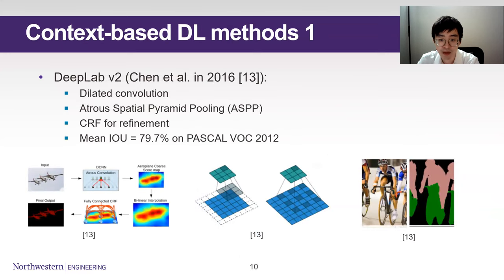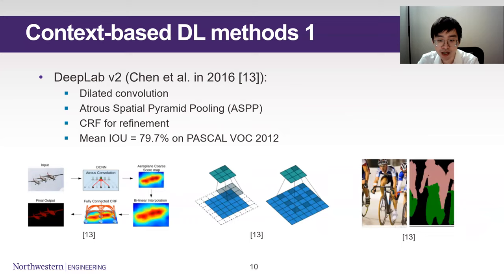Next is the context-based method, which considers the pixel within a spatial context other than just local features. Representative works include the DeepLab family. Here we focus on DeepLab version 2. It uses dilated convolution network to capture a larger field of view for each pixel in the network. A dilated layer, like the middle picture here, instead of filtering the neighbor pixel, it filters the skipped neighbors. ASPP is a combination of dilated convolutional layers. And at the end, they use dense CRF to refine the output results. The accuracy increases 17% compared to FCN.